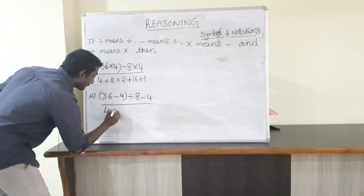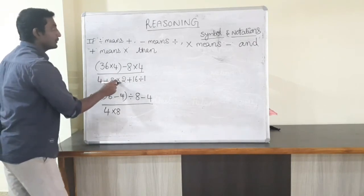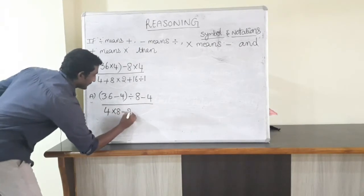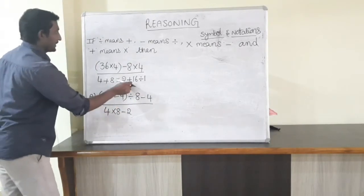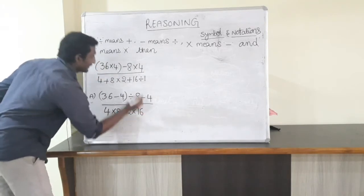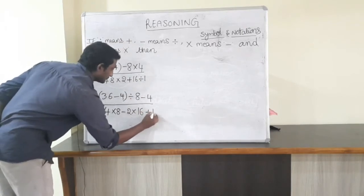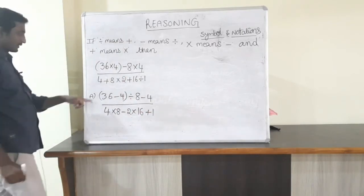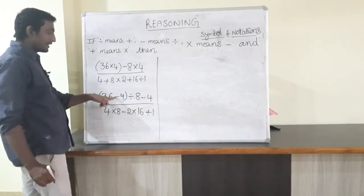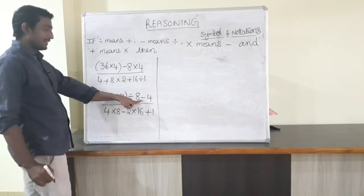In the place of plus you have to write into. Into means minus. Plus means into. 16 divided by means plus. So the rewritten expression is: 36 minus 4 divided by 8 minus 4 into 8 minus 2 plus 16 plus 1.